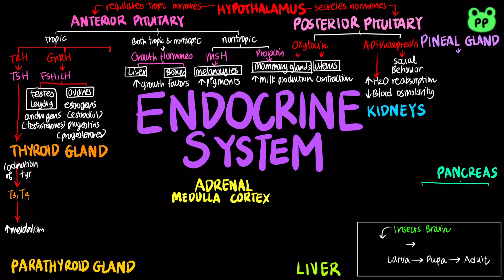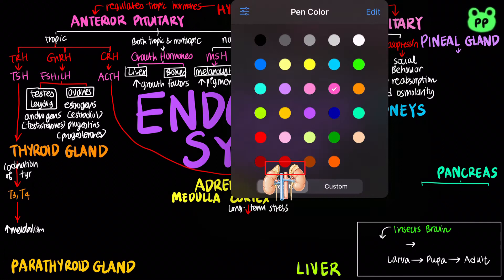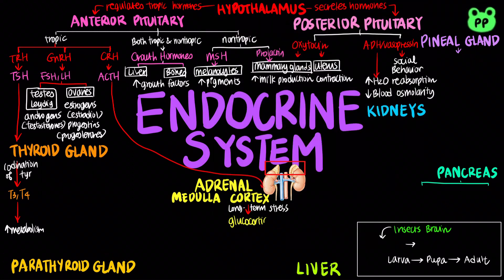During stress, the hypothalamus stimulates corticotropin-releasing hormone, or CRH, which stimulates the anterior pituitary to secrete adrenocorticotropic hormone, or ACTH, which stimulates the adrenal cortex to release corticosteroids, including glucocorticoids such as cortisol, that lead to an increase of blood glucose by breaking down proteins and fats, and suppression of the immune system.